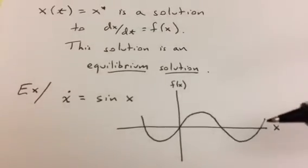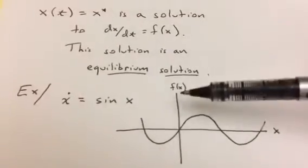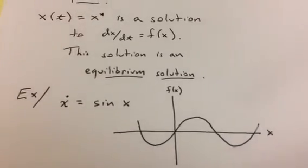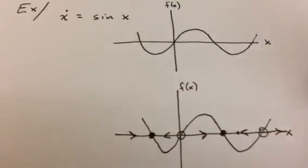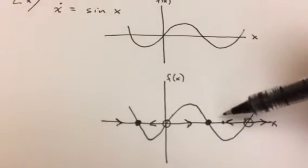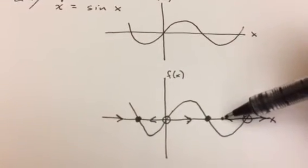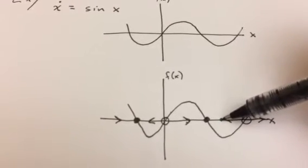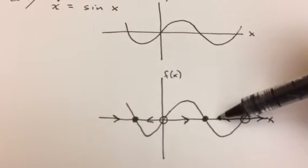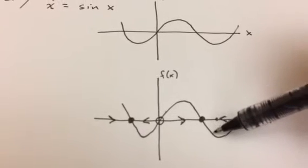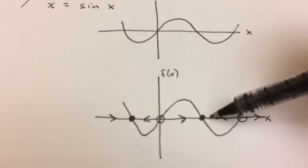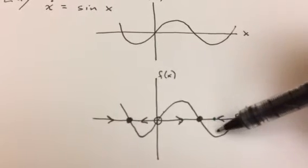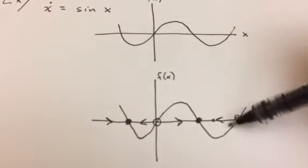and Steve started by plotting f of x as a function of x. And then he filled in some arrows, saying that if we start at a position here, we know that our change with respect to time is going to be negative, so our position will move this way. Our change with respect to time is still negative, we'll move this way, etc. And so we can draw in an arrow in this direction whenever the change with respect to time is negative.